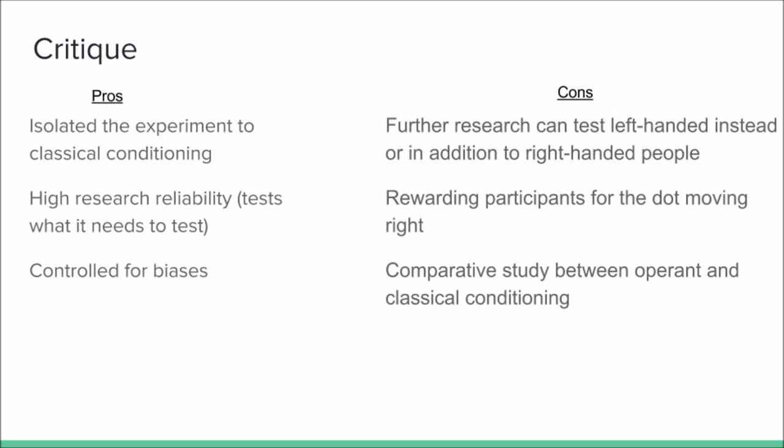An additional possibility, separate from those previously mentioned, is to create a joint experiment using both classical conditioning and operant conditioning. This could allow the researcher to find what type of learning elicits a stronger response from the participant.